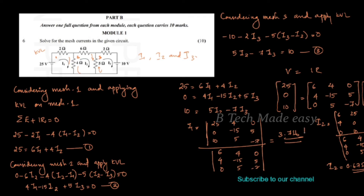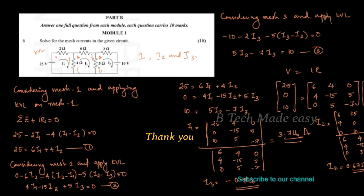For i3, we similarly replace the third column with the constants [25, 0, 10] and compute the determinant to find the value of i3.